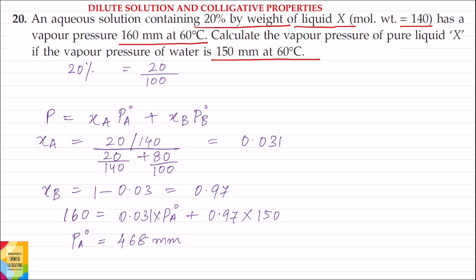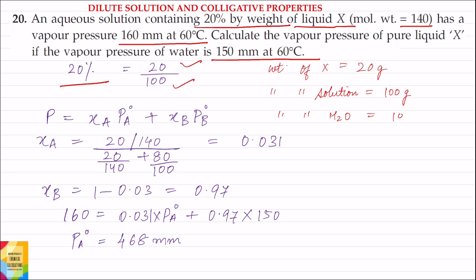The solution contains 20% by weight of liquid X. This means if the weight of solute X is equal to 20 grams, then the weight of solution is equal to 100 grams, and therefore the weight of solvent, which is water, is equal to 100 minus 20, which equals 80 grams.